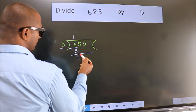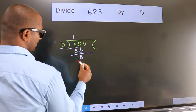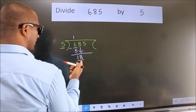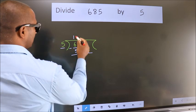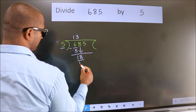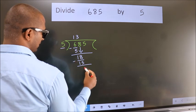After this bring down the beside number. So 8 down. So 18. A number close to 18 in 5 table is 5 threes 15. Now we subtract. We get 3.